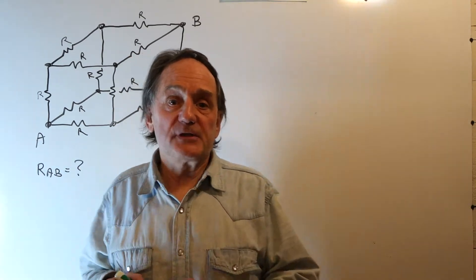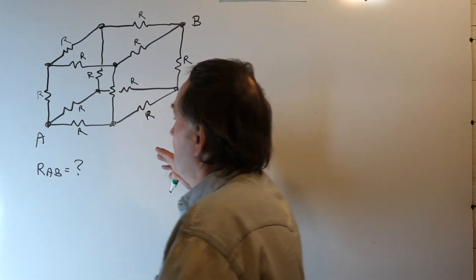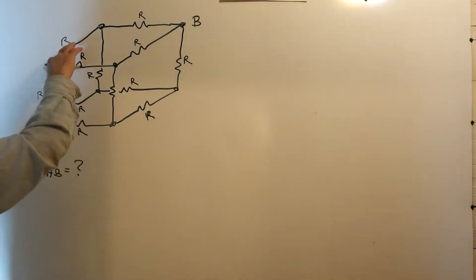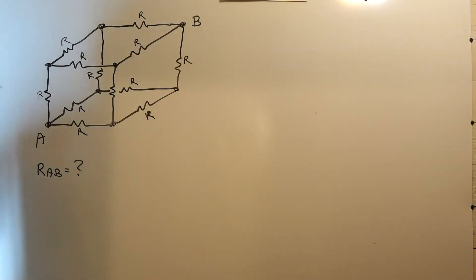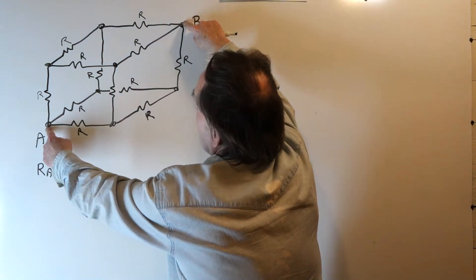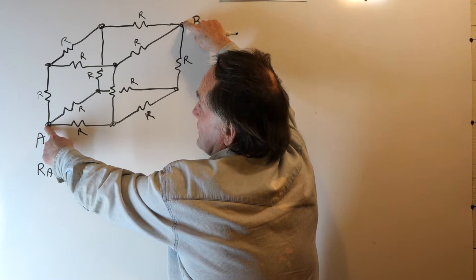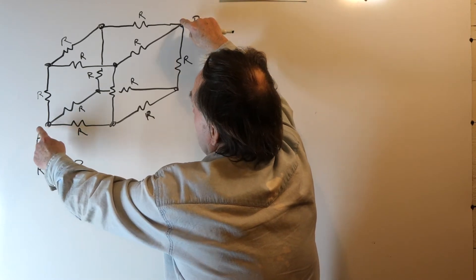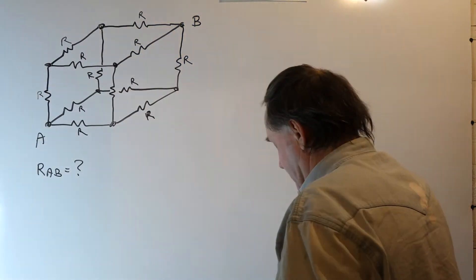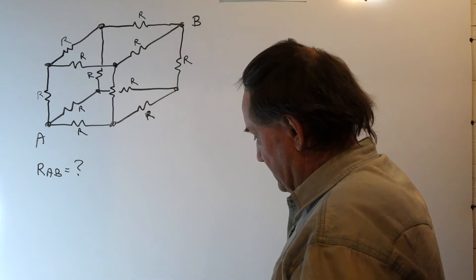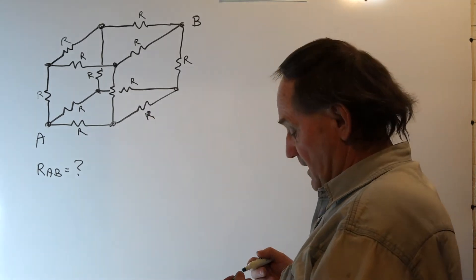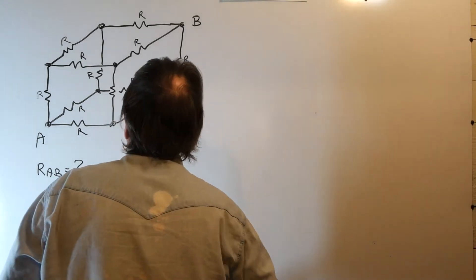Now let's look at the resistor cube. Here we have a cube of 12 resistors: 4 on top, 4 on the bottom, and 4 on the sides. They all have the same value R. What we want to do is find the equivalent resistance between the diametrically opposed nodes. I've seen people solve this using Y-delta conversions and other techniques, but you don't have to do that. Let's just invoke symmetry and solve this problem directly.